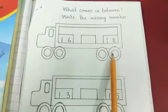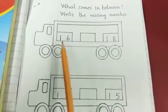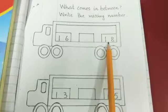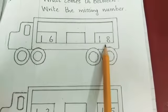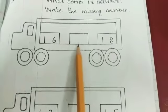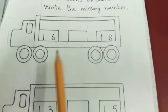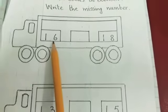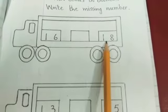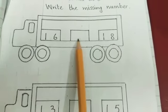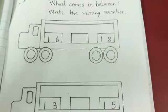This is a truck. Here are two numbers: sixteen, eighteen. Sixteen, eighteen. One number is missing. Which number is missing? Sixteen, seventeen, eighteen. Seventeen is missing, so we will write in between, seventeen.